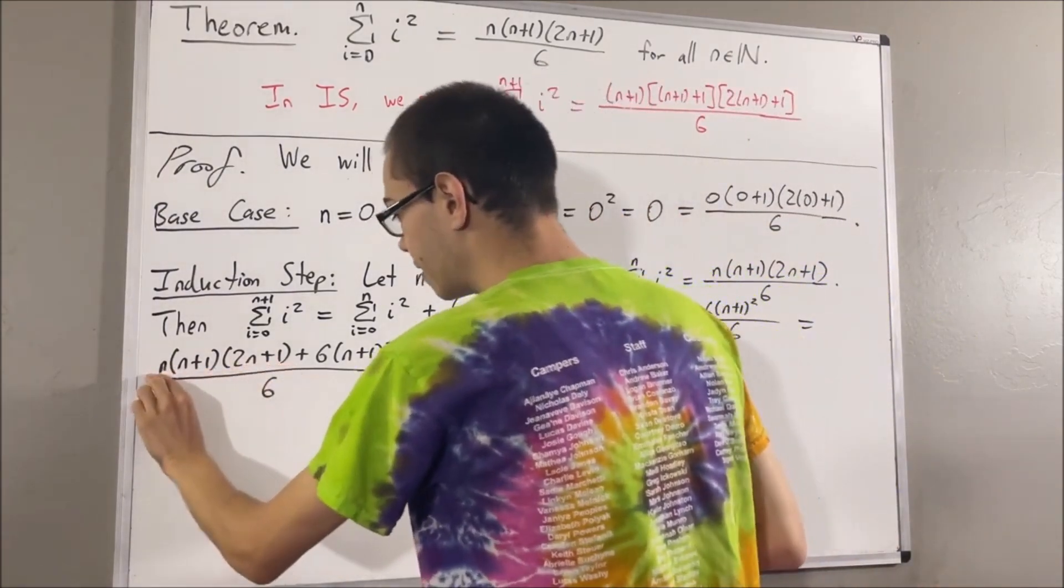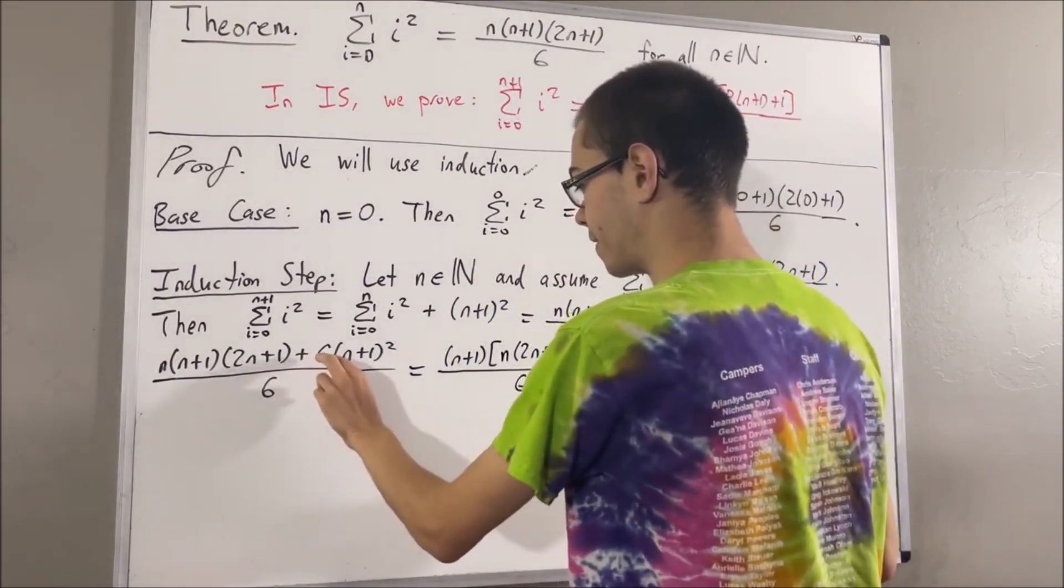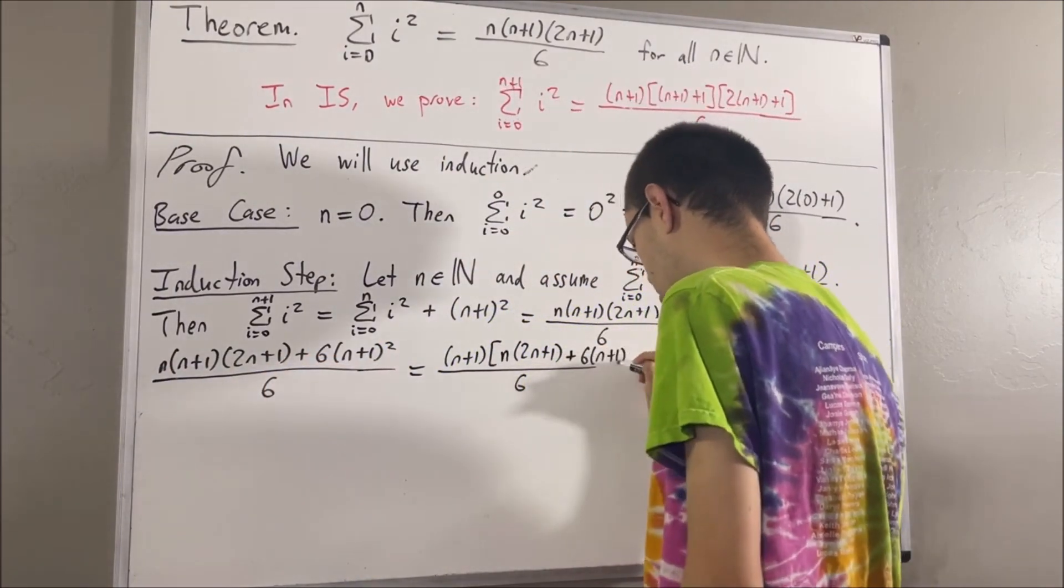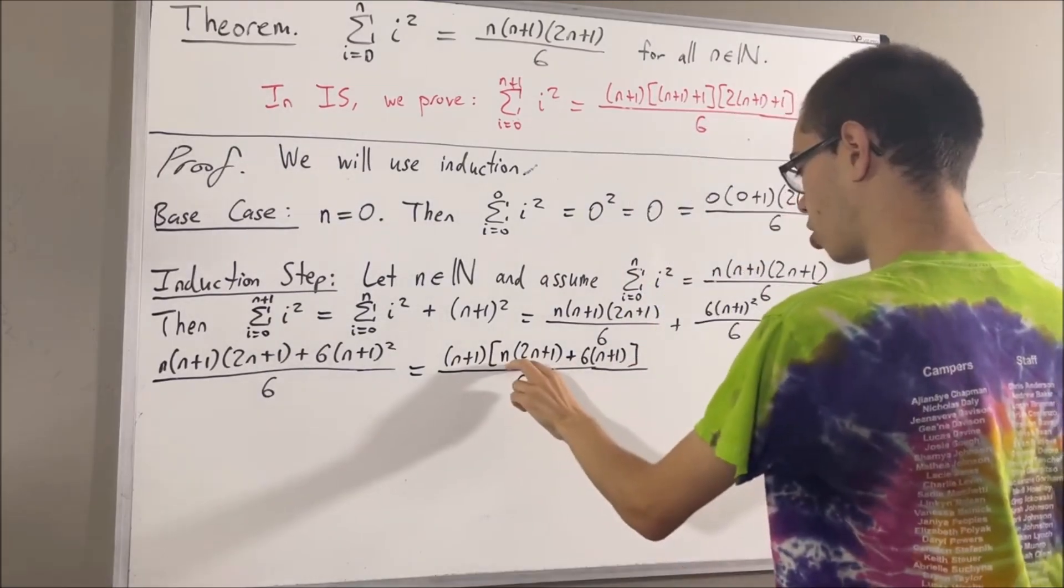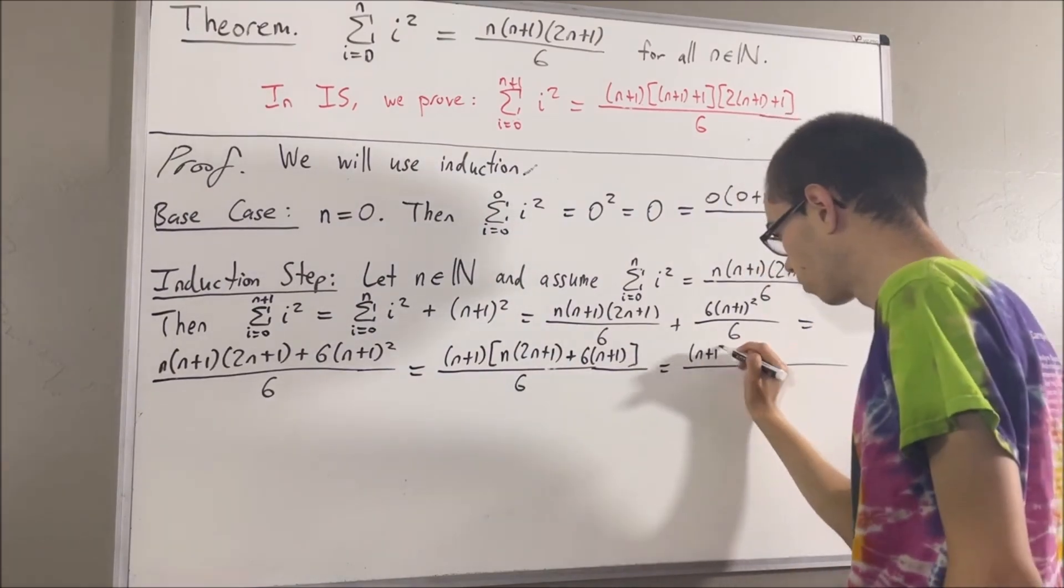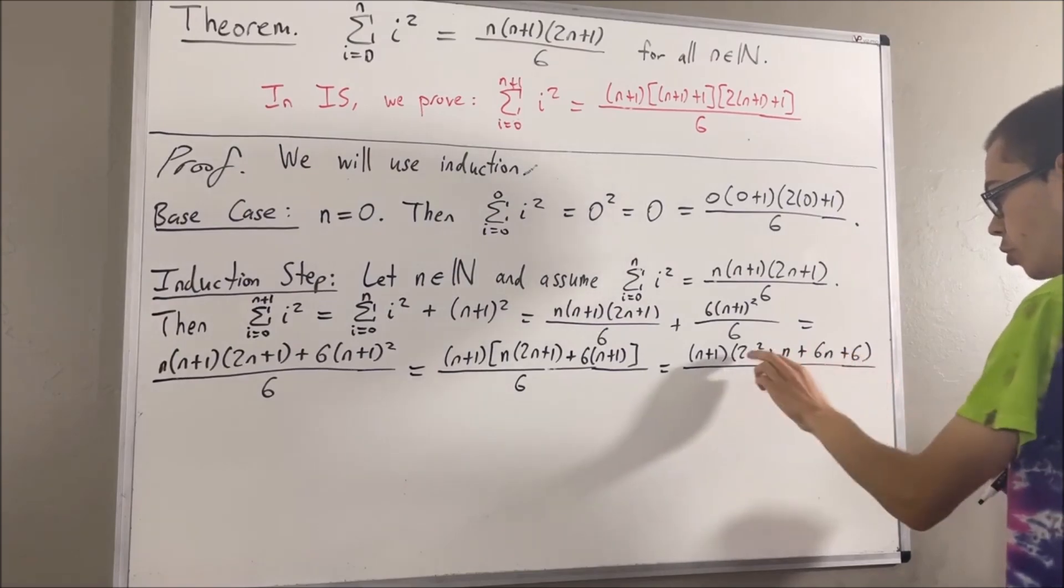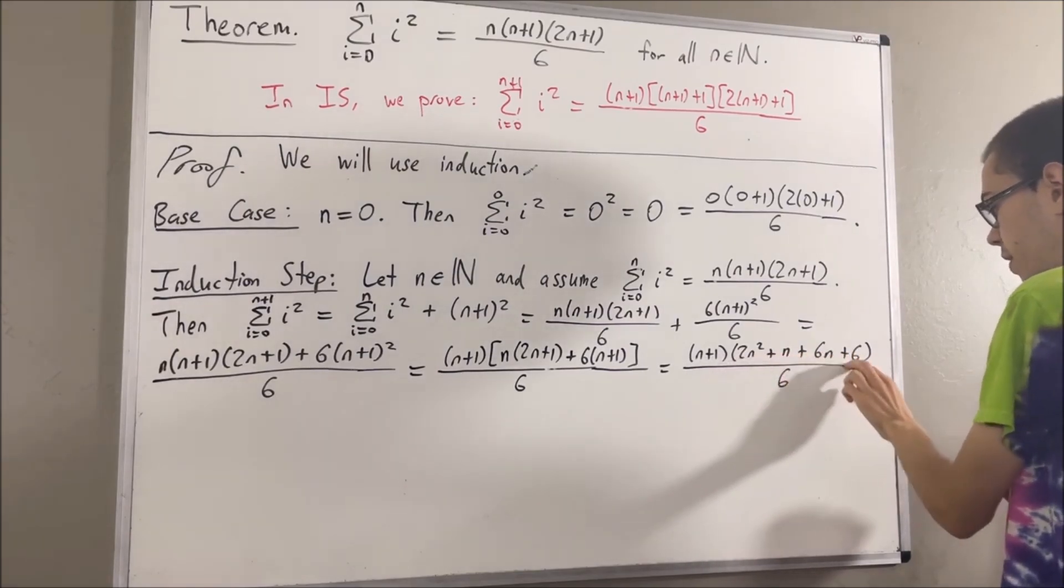For the second term, we're going to have 6 times n plus one. And now, let's just distribute across this parentheses, and let's distribute across this parentheses. Now, we see that this is just equal to 2n squared plus 7n plus 6.